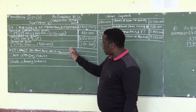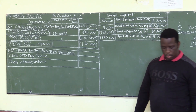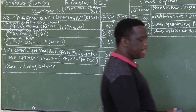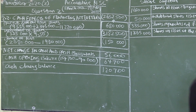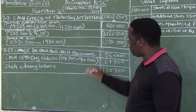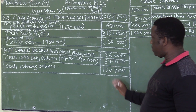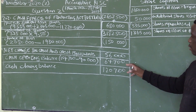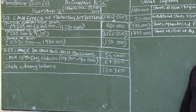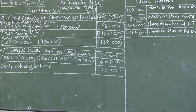Let us proceed to another section which is net change in cash and cash equivalents. The net change is calculated — even if you are required to calculate it and this format is not given, you may just draw it in your answer sheet. If you are given a blank column space, you must draw it like this, because if you are not calculating the net change using this format of working backwards, the chances of getting the wrong amount are very likely.